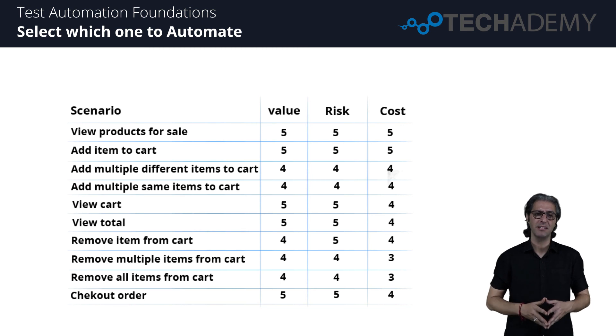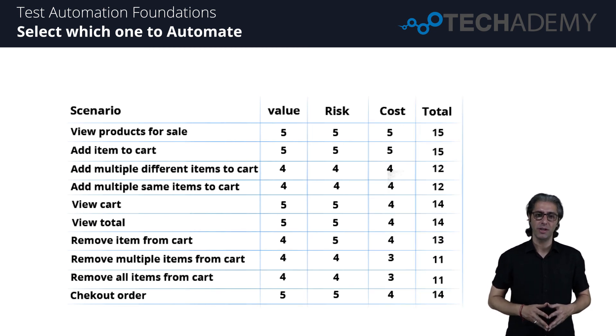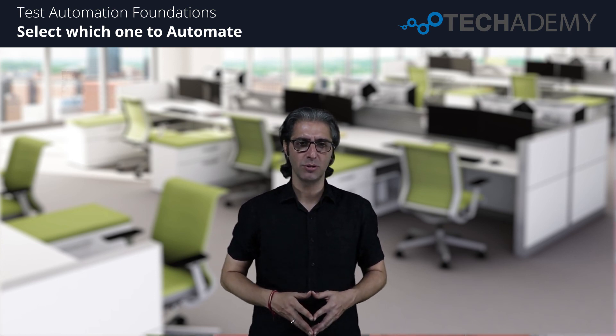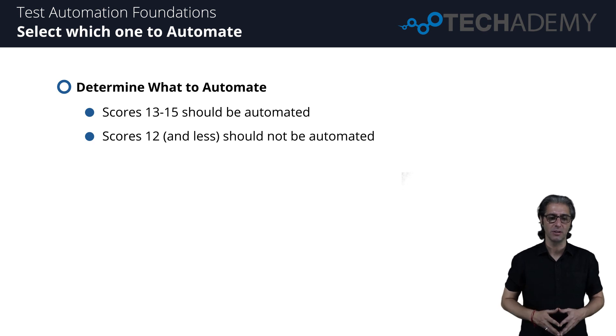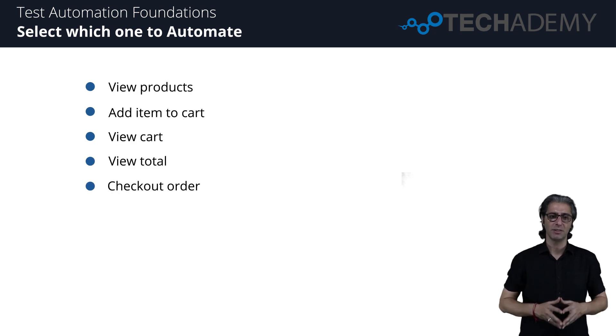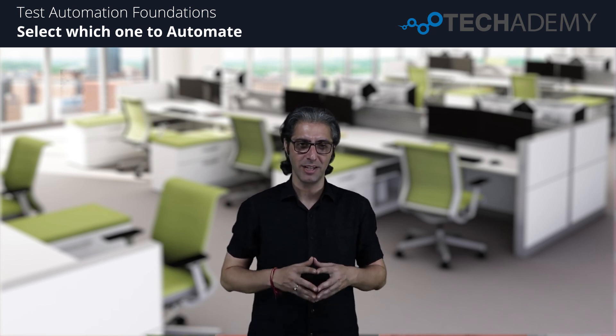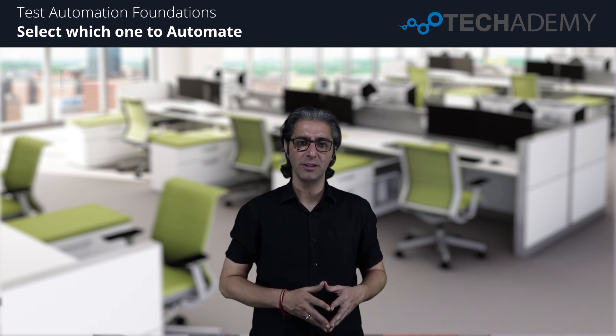Hi everybody and welcome back. In this session we combine value, risk, and cost scores to select the best candidates for automation. We sum the three scores for each scenario to get a total. With a scale where scores 13 to 15 should be automated and scores 12 and below should not, the top scenarios to automate are: view products, add item to cart, view cart, view total, and check out order. These five scenarios are the most important to prioritize. This isn't a hard-and-fast rule — adopt this model to suit your team's needs.